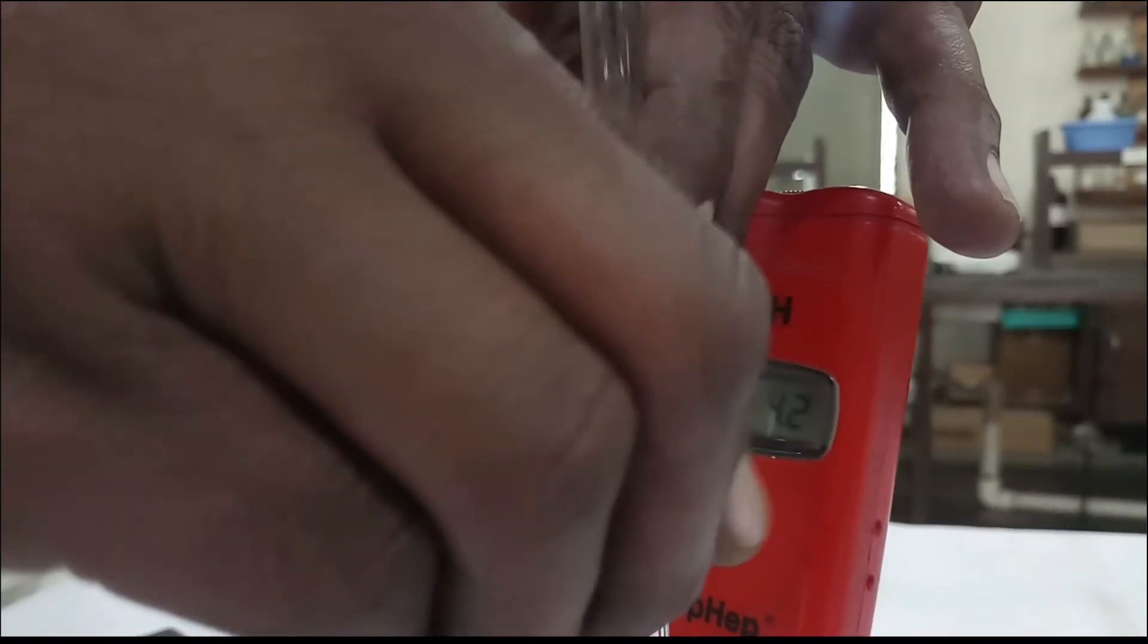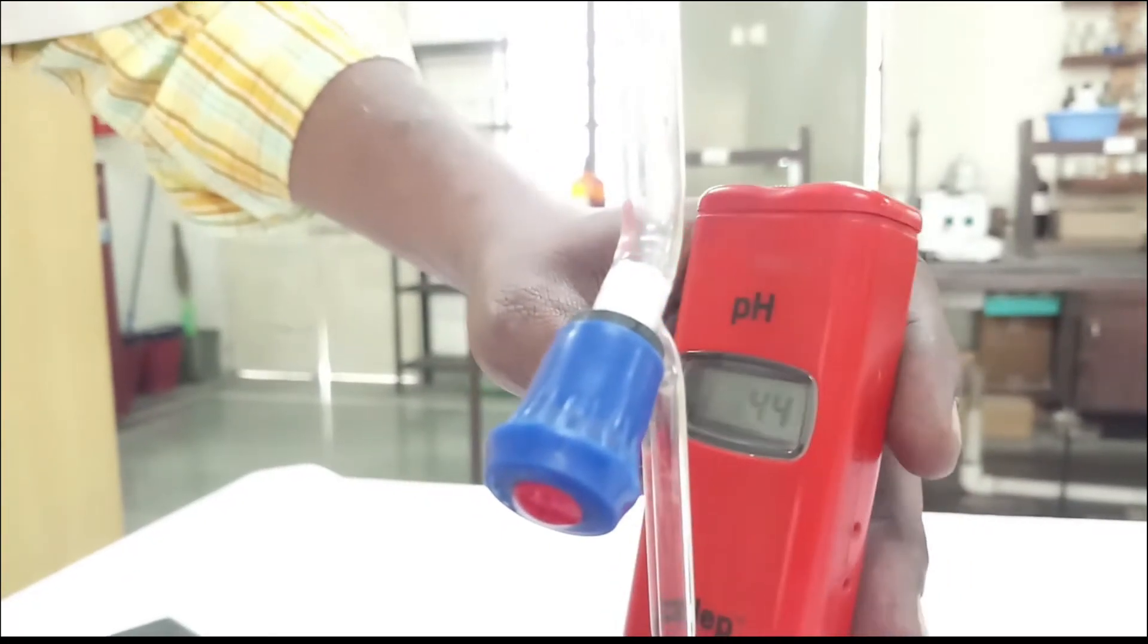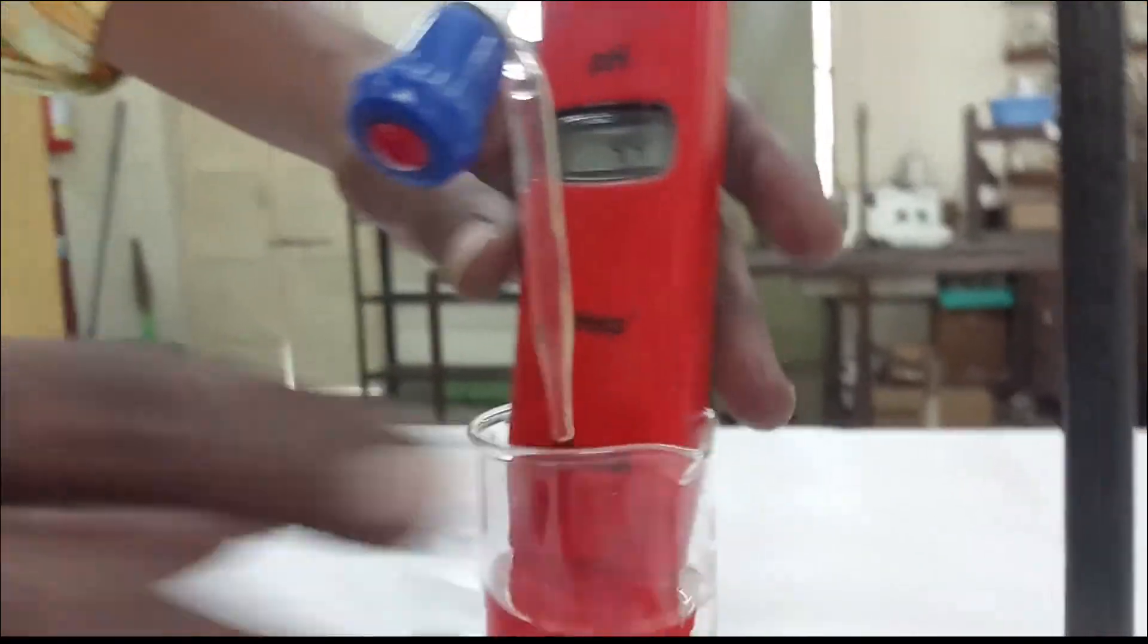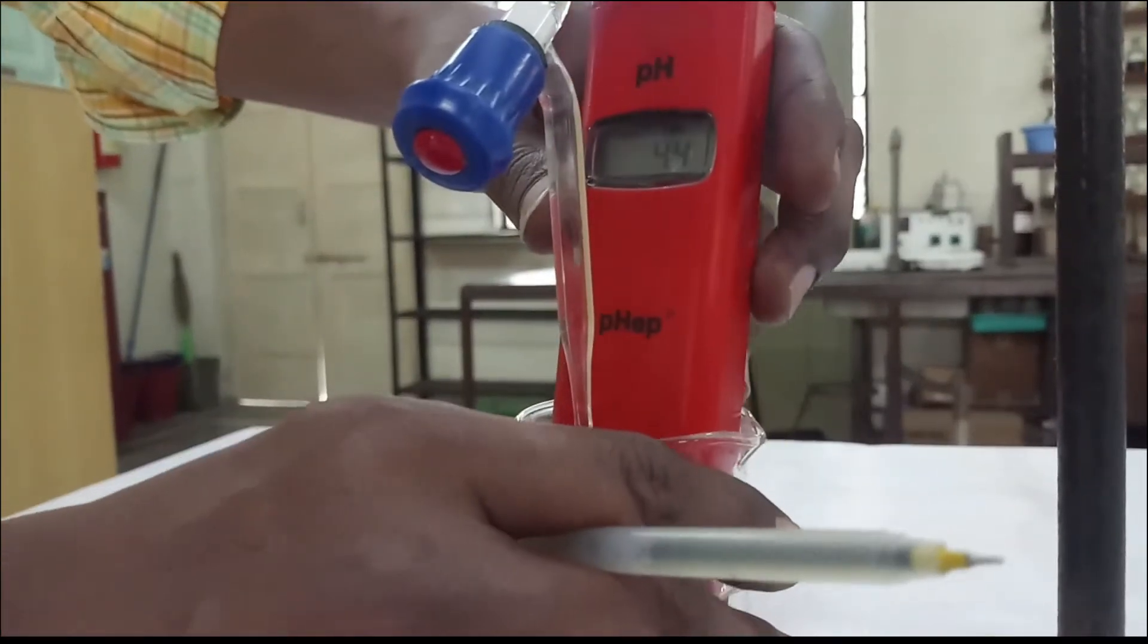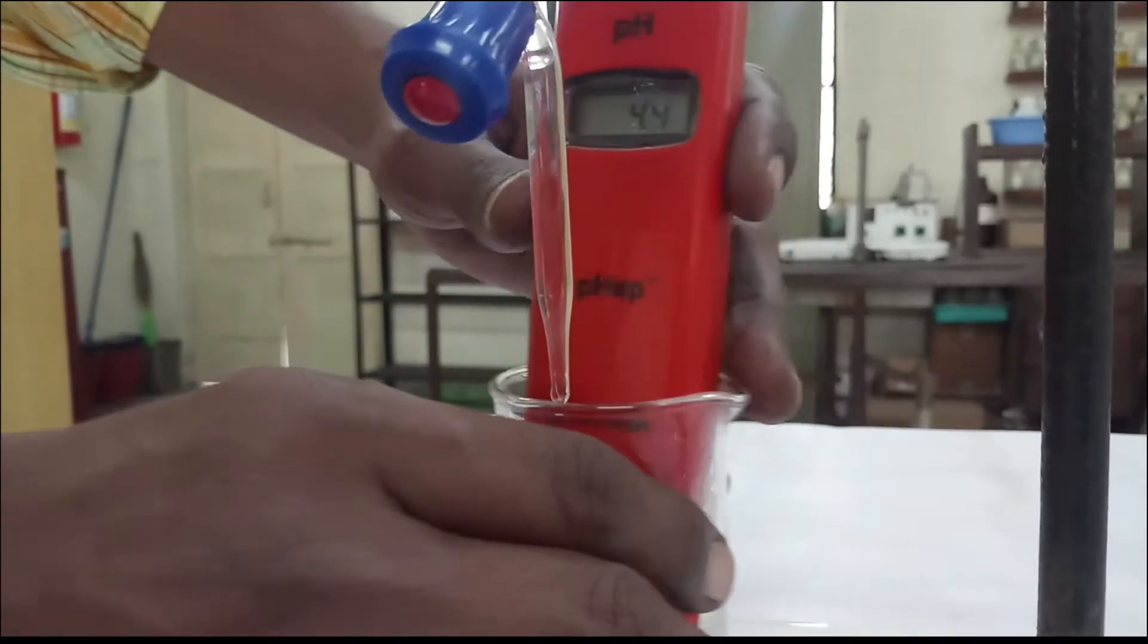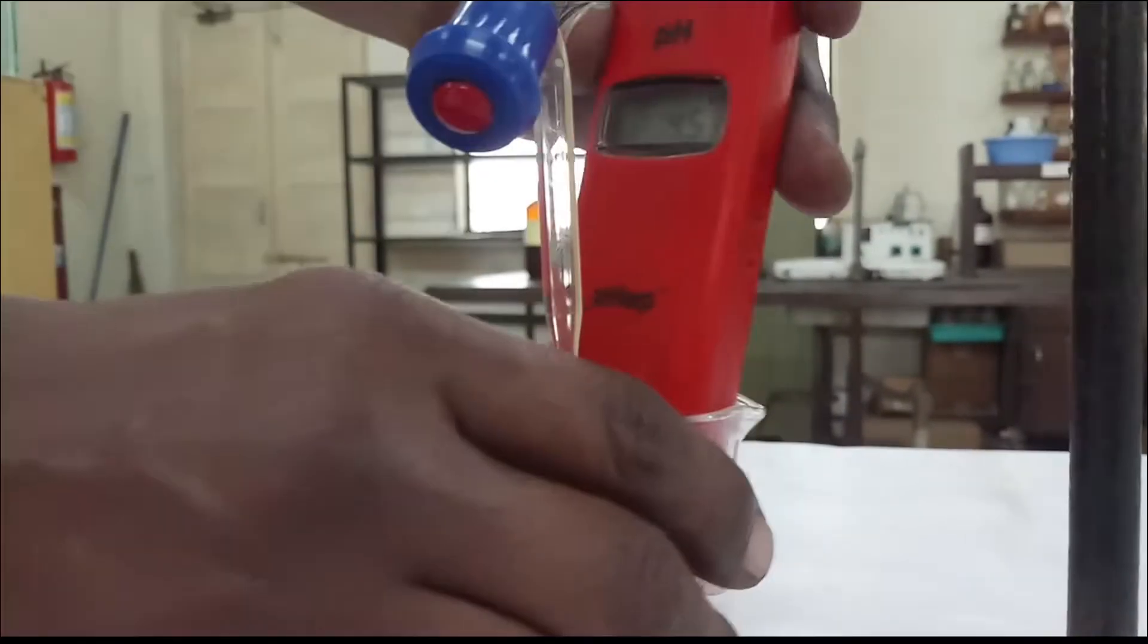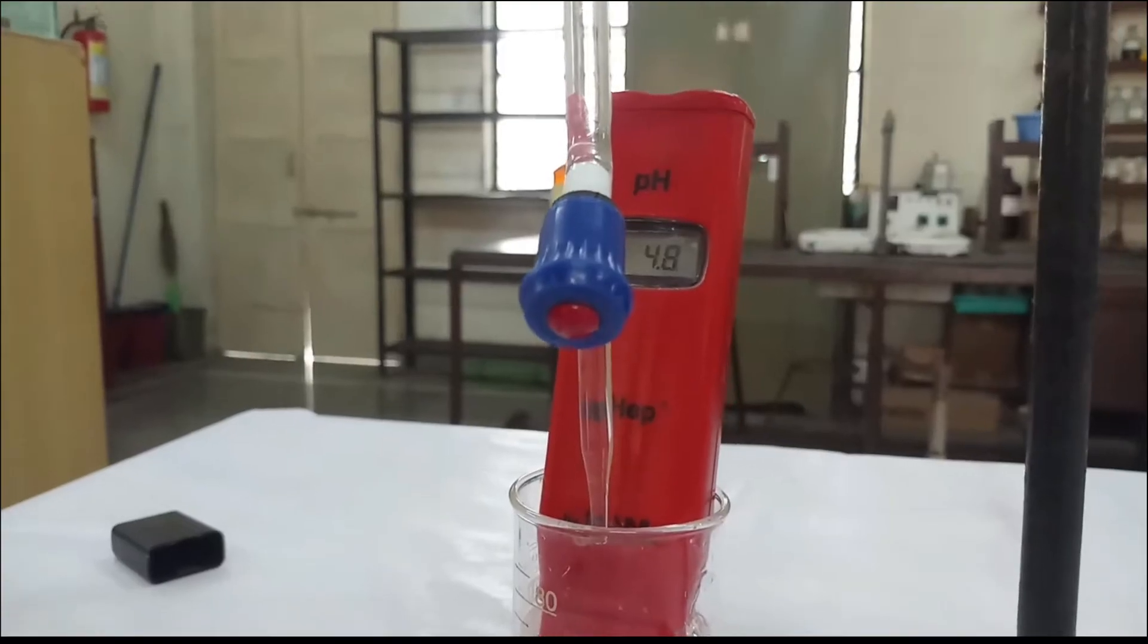So in this way, every time go on adding 0.2 ml of NaOH and go on noting down the pH changes. So here you can see 4.3. Don't forget to stir it slightly, so that whatever NaOH we are adding should completely react with the acid in the beaker. So we can see a gradual increase in the pH as we go on adding 0.2 ml every time. The initial reading was 3.3 ml and now it has reached up to 4.6 ml. A gradual increase throughout.